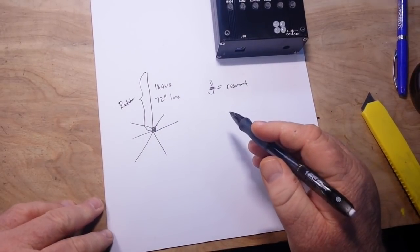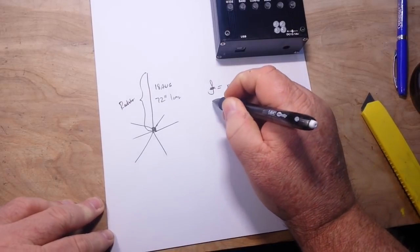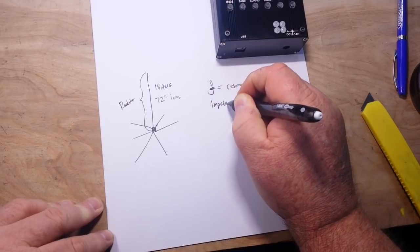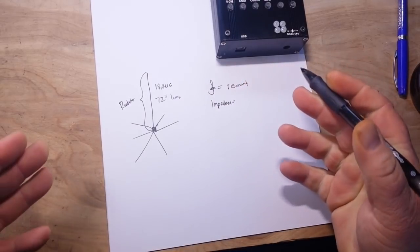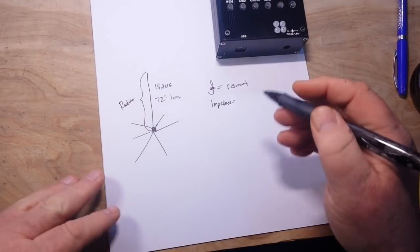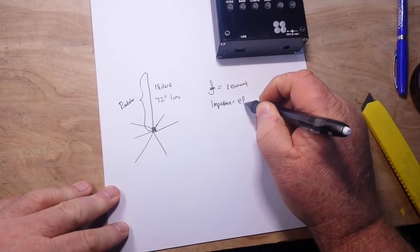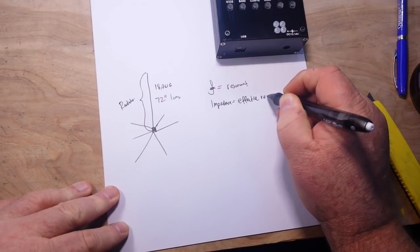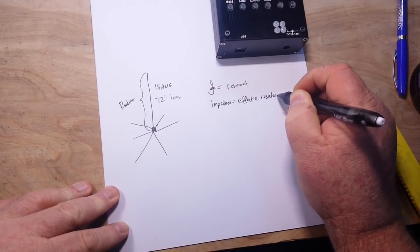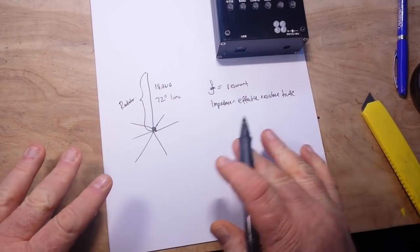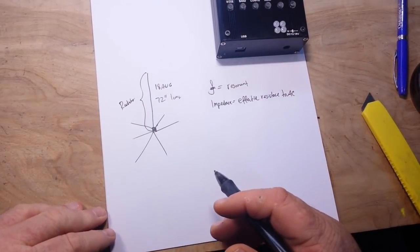And that simply means at what frequency is it the most efficient? Then we also need to know what its impedance is. And what is impedance? Impedance is basically the AC form of resistance. We'll call it effective resistance to AC. That kind of simplifies it but it gives you all you really need to know for this point.